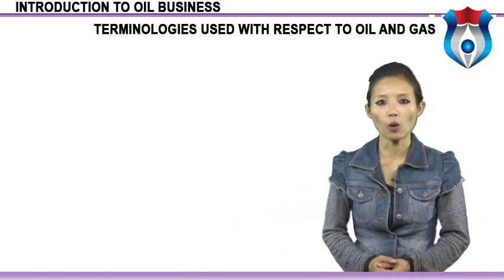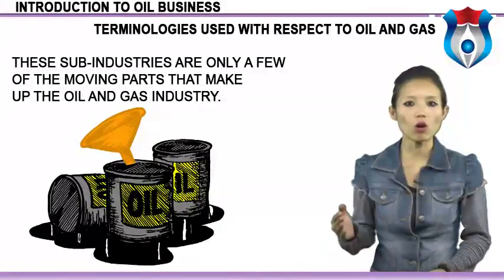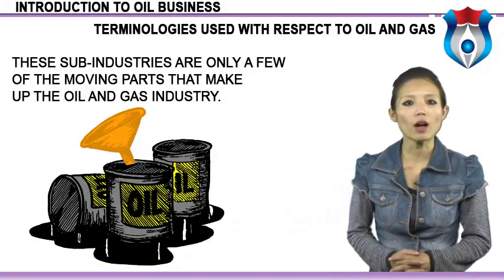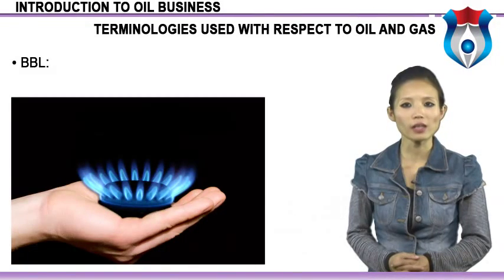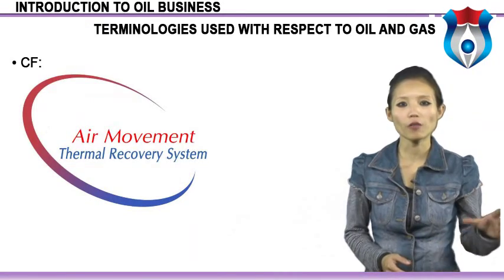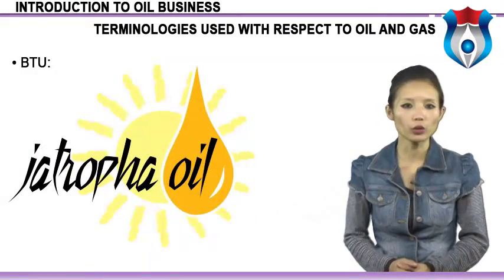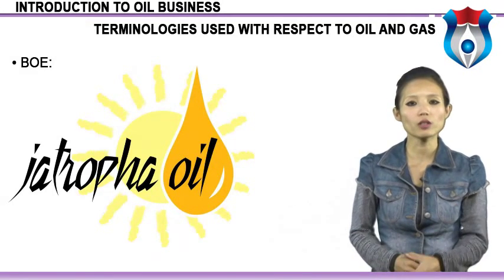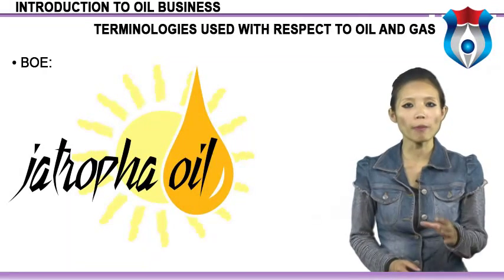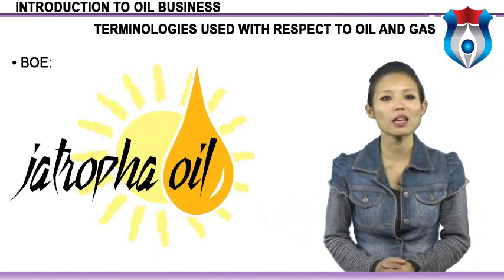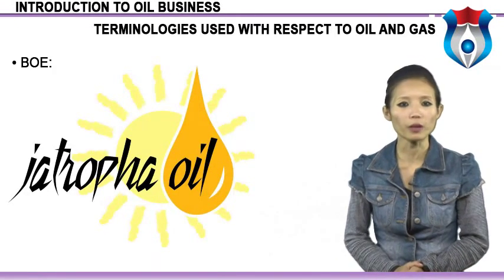Terminologies used with respect to oil and gas: these sub-industries are only a few of the moving parts that make up the oil and gas industry. Oil and gas has a language of its own that investors need to understand. B.O.E. — barrel of oil equivalent — is a unit of energy based on burning one barrel (42 U.S. gallons) of crude oil. The B.O.E. is used by oil and gas companies in their financial statements as a way of combining all reserves and production into a single measure. Find out how these commodities' fluctuating price affects more than just how much someone pays at the pump.